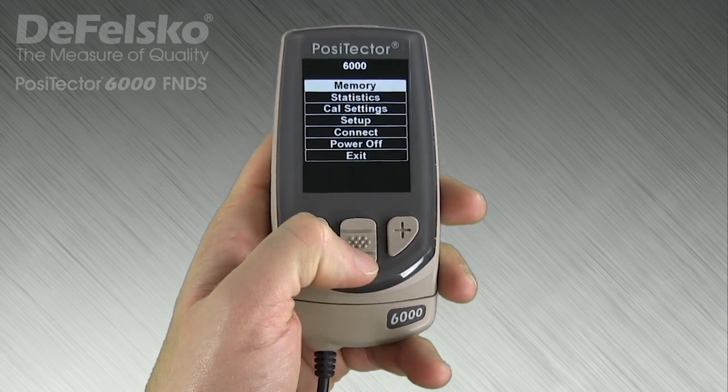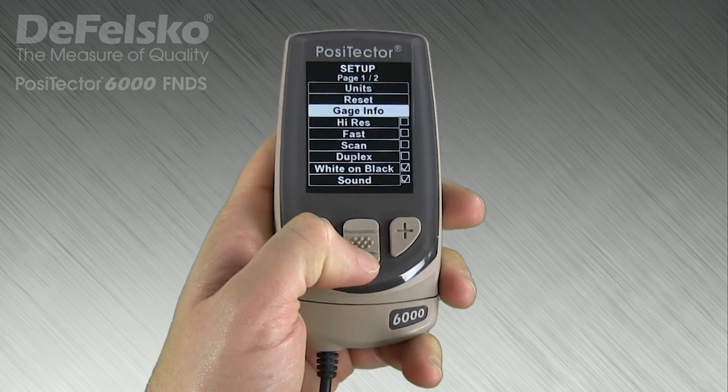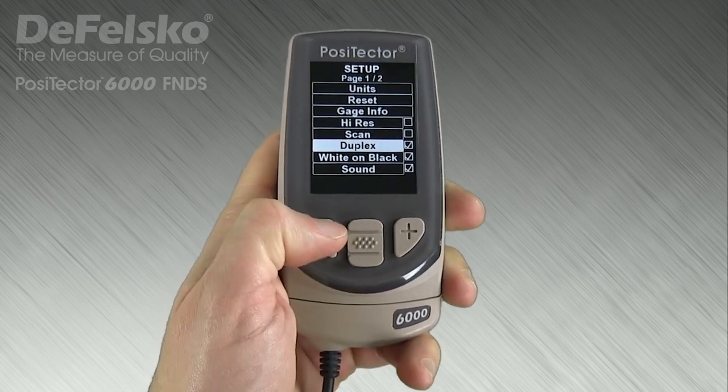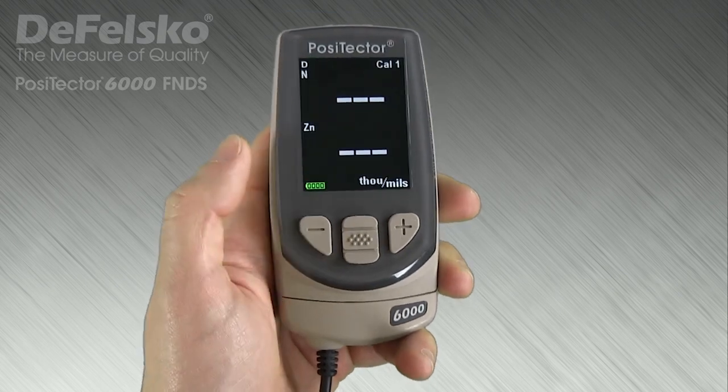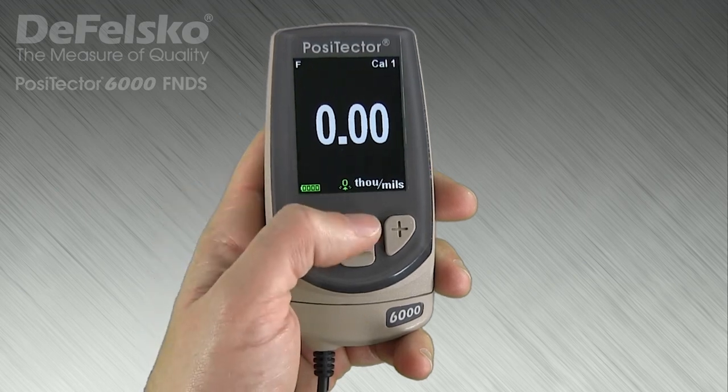Measuring coated galvanizing requires that both operations happen in a single reading. This is performed by selecting the duplex menu option. Alternatively, the up navigation button quickly toggles duplex mode on or off.